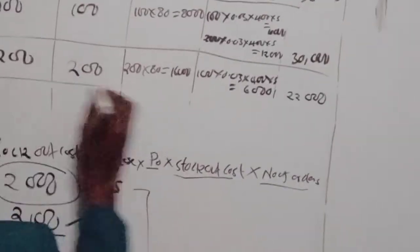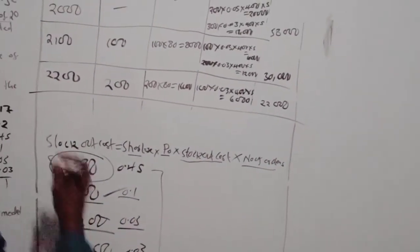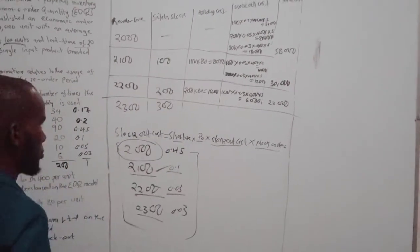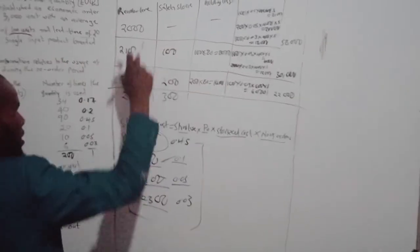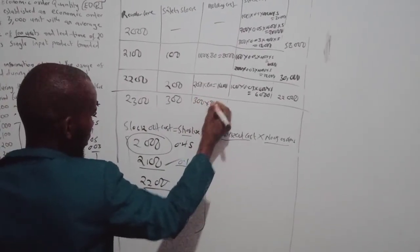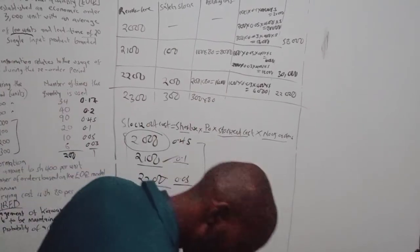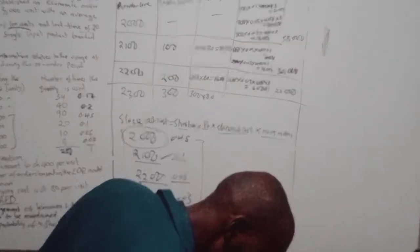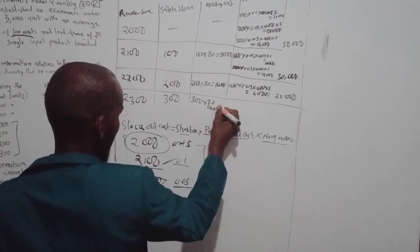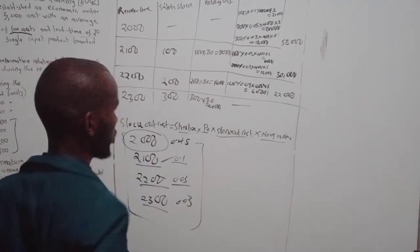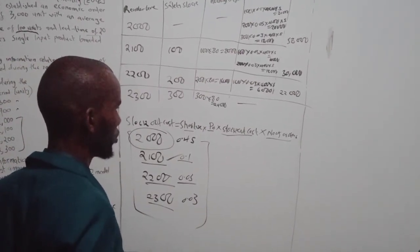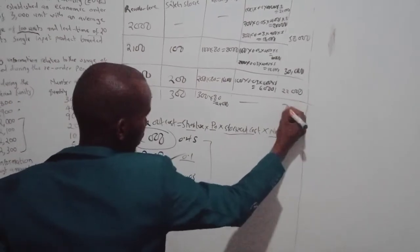For safety stock = 300: safety stock = 2,300 − 2,000 = 300 units. Holding cost = 300 × 80 = 24,000. There is no stock-out cost at this level because 300 units of safety stock covers all demand scenarios. Total cost = 24,000.